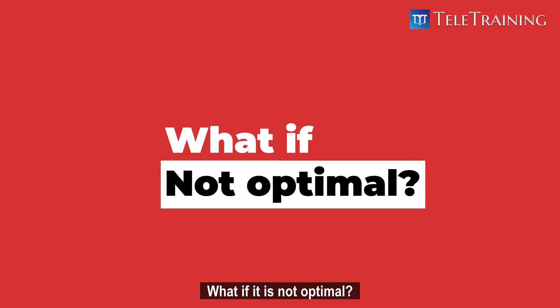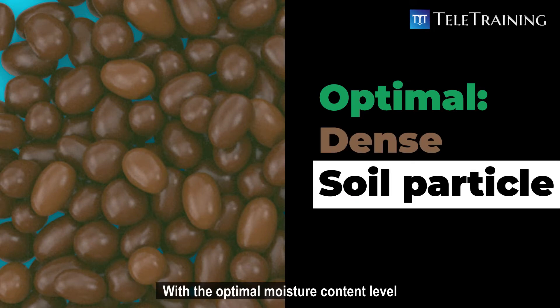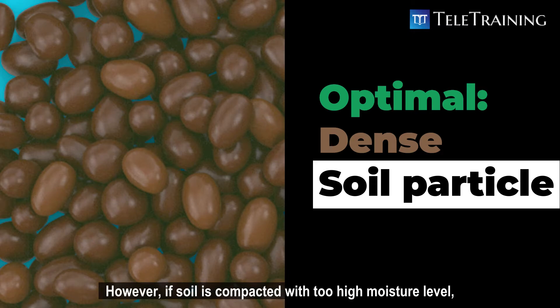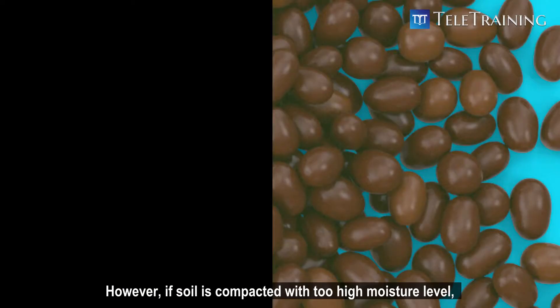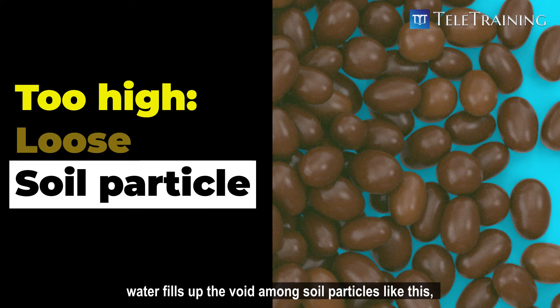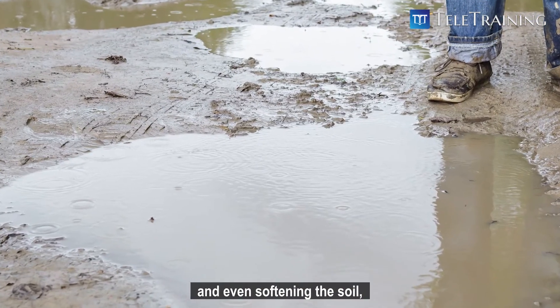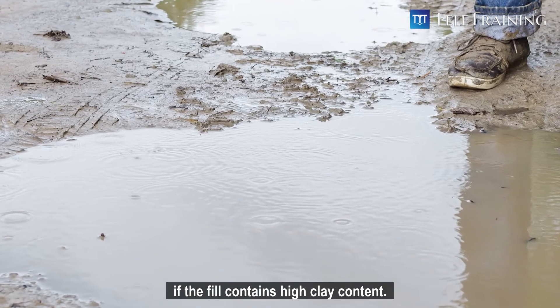What if the moisture content is not at the optimal level? With the optimal moisture content level, suitable water content makes soil particles dense. However, if soil is compacted with too high a moisture level, water fills up the voids among soil particles. Since water is nearly incompressible, this will prevent densification of the soil, and even soften the soil if the fill contains high clay content.